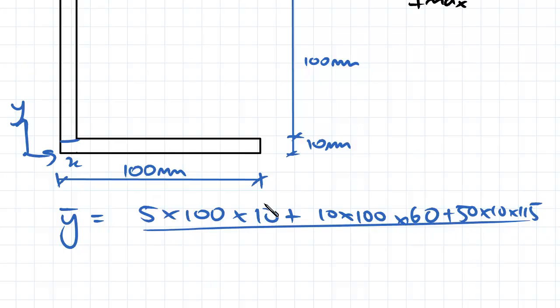Then we'll divide that by the sum of our area. So remember the equation for the centroid is area times distance from our origin to the centroid divided by the sum of the areas.